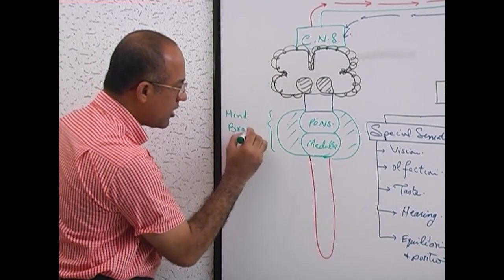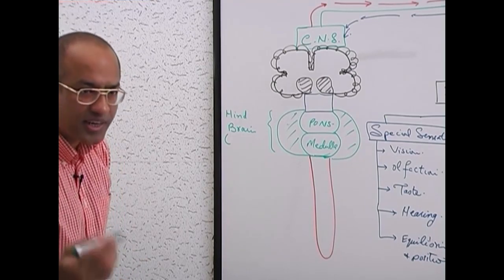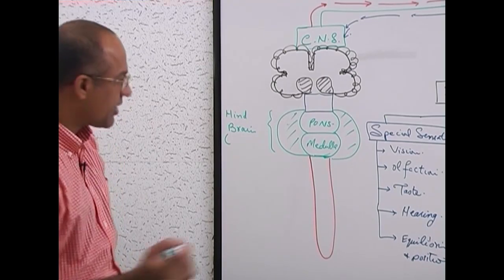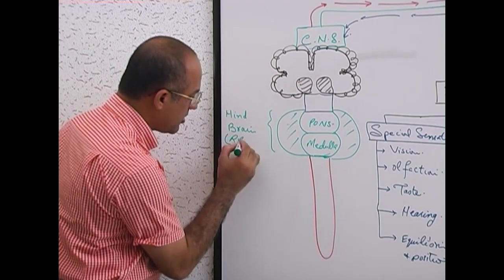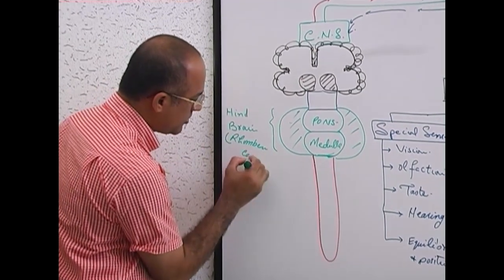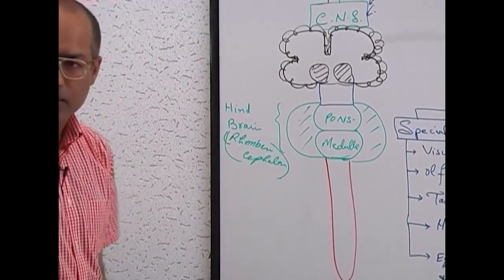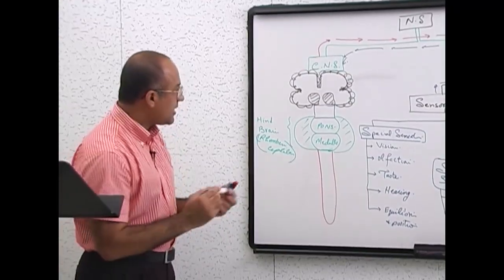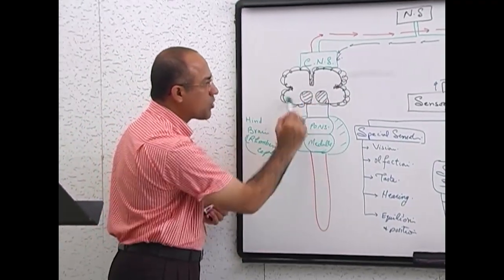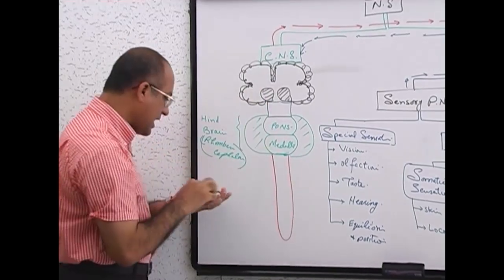The hindbrain — another name for the hindbrain is rhombencephalon. Here is the hindbrain, and here is the forebrain.